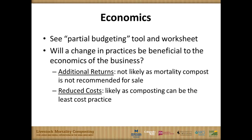The tool we've used to help people step through this process is basically laying out visually for the producer to try to decide which alternative is better — their current situation of disposal off-site or the transition to a composting alternative. A partial budget is a system that's been around for making incremental decisions in economics for a long time. It looks at additional costs, additional revenues, and reduced costs and reduced revenues.